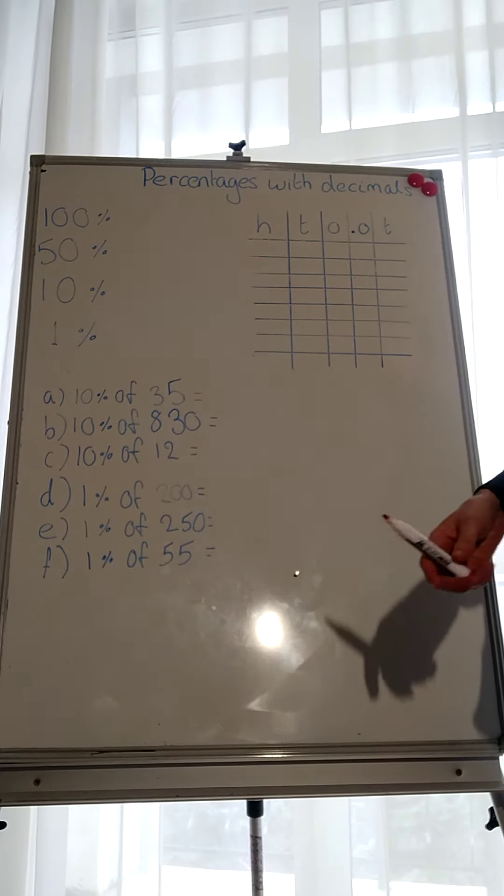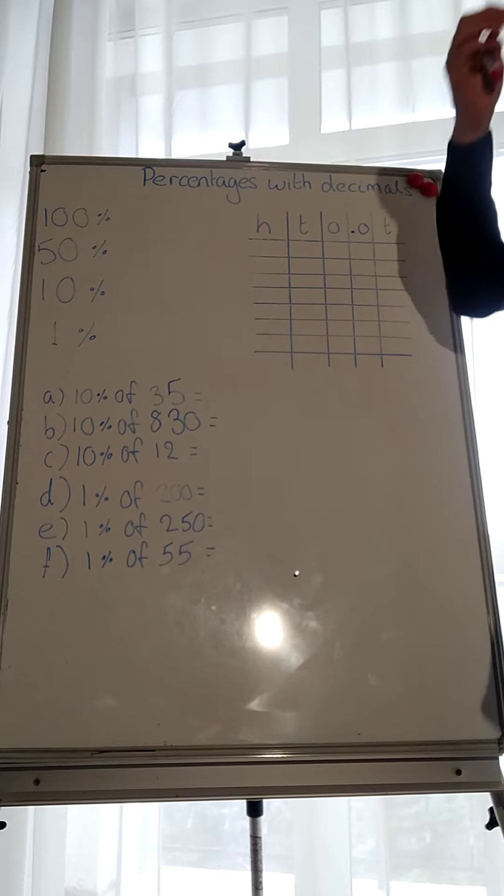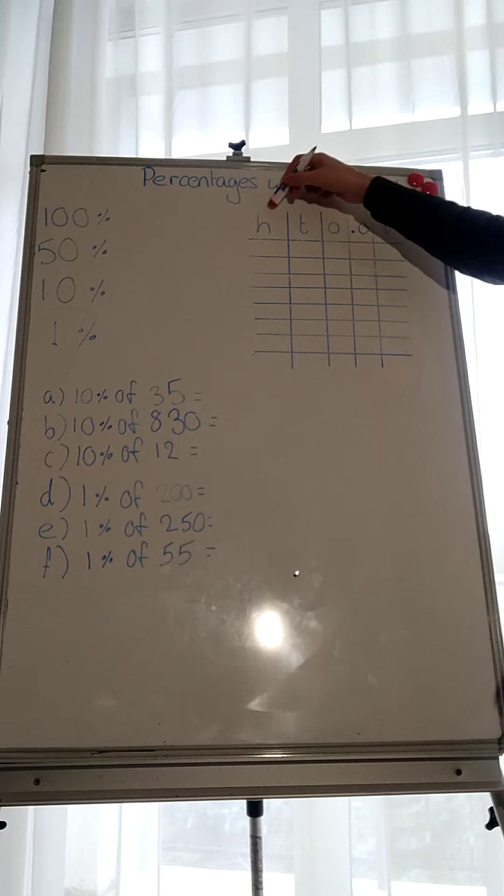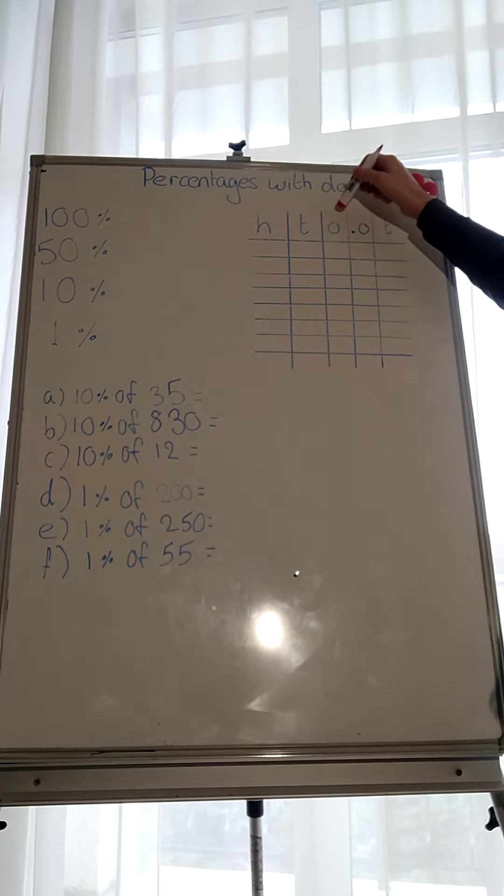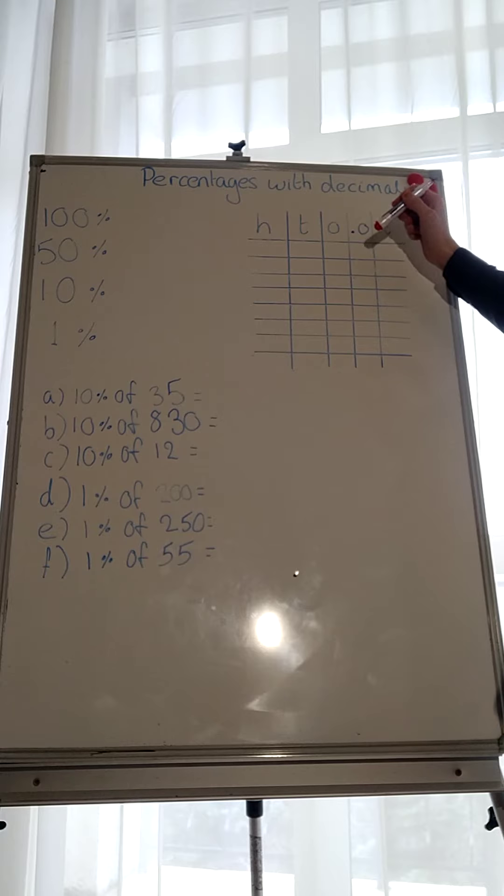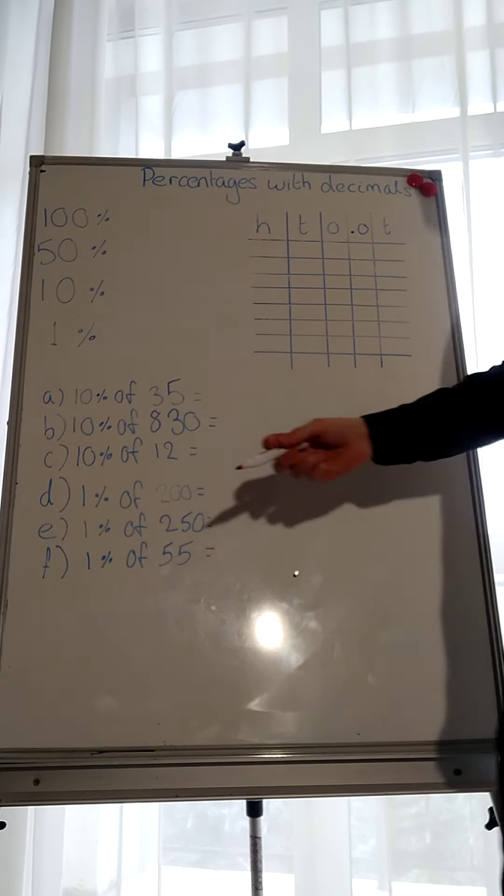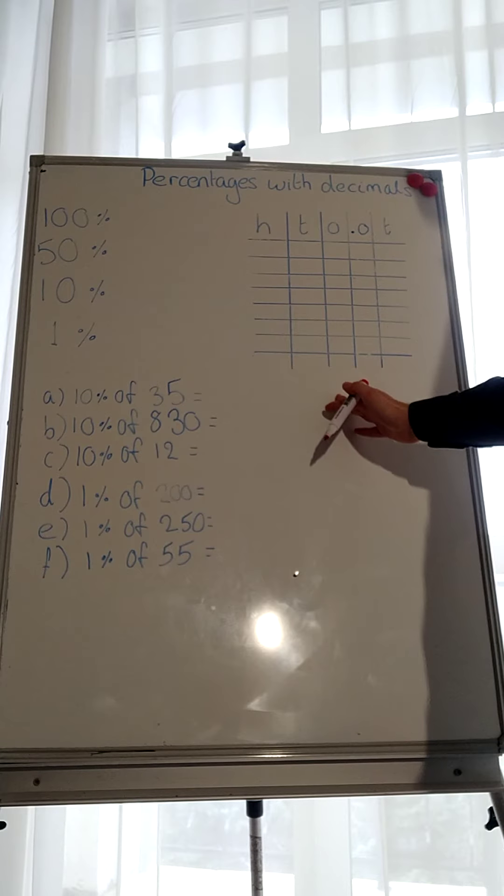First thing I want you to do is copy the place value charts that we've got on the board here. So just to recap, if you don't remember, we use this to look at the position of the numbers in relation to the decimal. So you've got this column which represents hundreds, tens, ones, 0.1s, and 0.01s. Copy that into your books and you can use that for extra assistance if you're finding the method difficult.